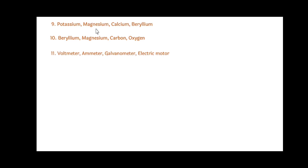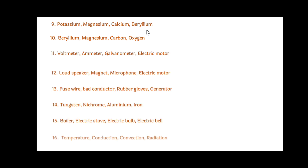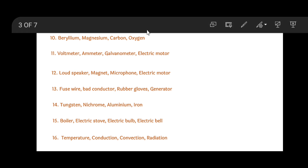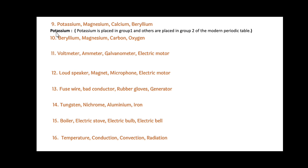Next: Potassium, Magnesium, Calcium and Beryllium. Among these four, the odd one out is Potassium. Since Potassium is placed in Group 1, while others are placed in Group 2 of the modern periodic table.